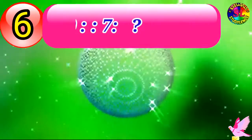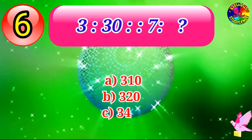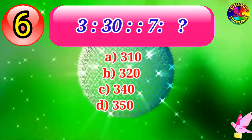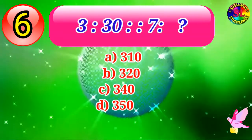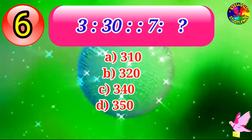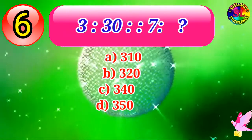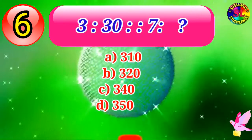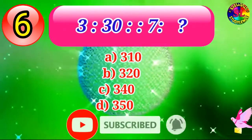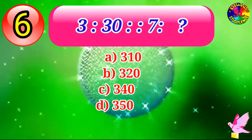Let's swim into the next question. It's from mathematics, a very easy question. 3 is to 30, 7 is to what? Find out the right answer. A. 310. B. 320. C. 340. D. 350.